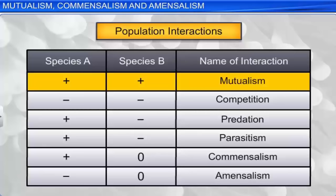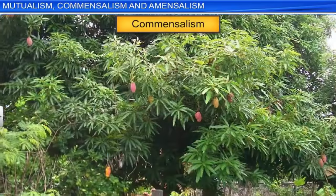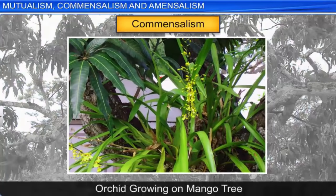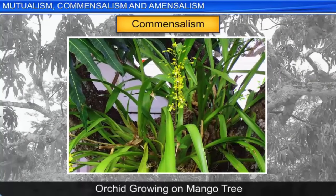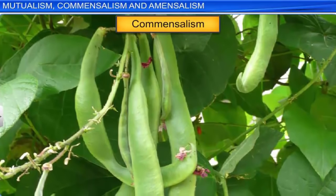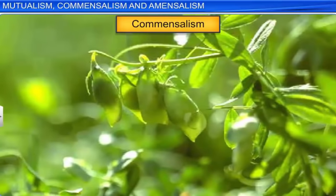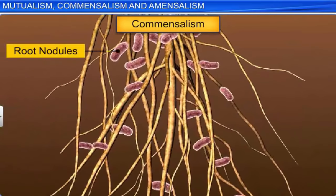Apart from mutualism, another inter-specific interaction is commensalism, seen in plants, animals, and the aquatic world. A common example of commensalism in plants is seen between an orchid growing on the branch of a mango tree. Although this epiphyte benefits from the interaction, the mango tree is neither harmed nor benefited. Another example of commensalism is seen in leguminous plants such as pea, beans, and lentils, which are associated with the nitrogen-fixing bacteria Rhizobium. The bacteria in the root nodules live symbiotically with the host plant, obtain nutrition from the host plant, and in return fix atmospheric free nitrogen as nitrites and nitrates.